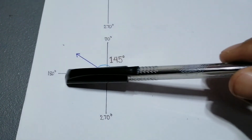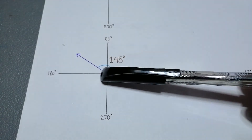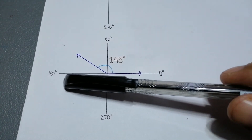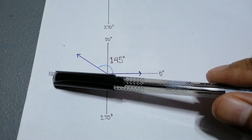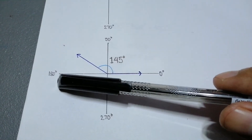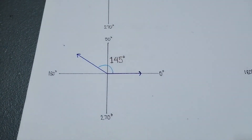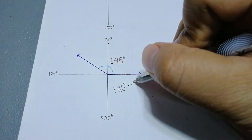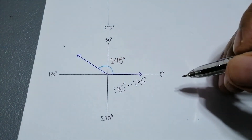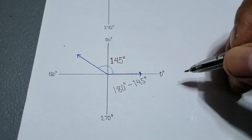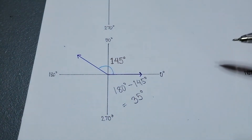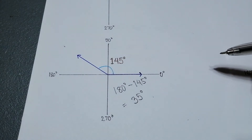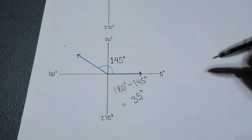The negative x-axis will be our base. To determine the reference angle, since 145 degrees is less than 180 degrees, all we have to do is simply subtract 180 degrees by 145 degrees. Getting the difference, we will be able to determine the reference angle of 145 degrees. Therefore, the reference angle of 145 degrees is 35 degrees.